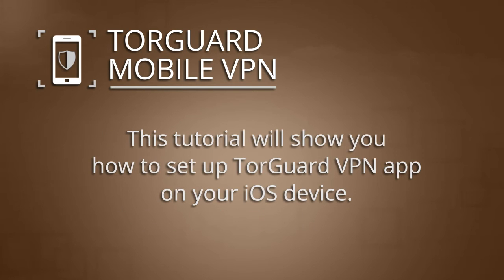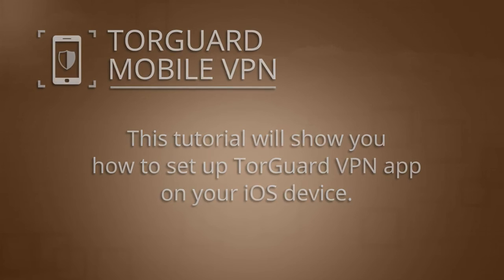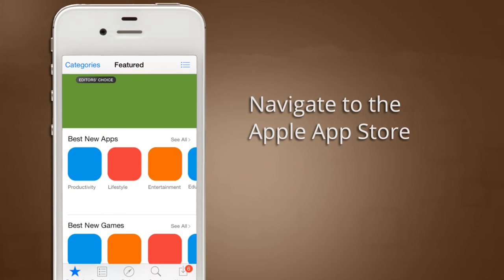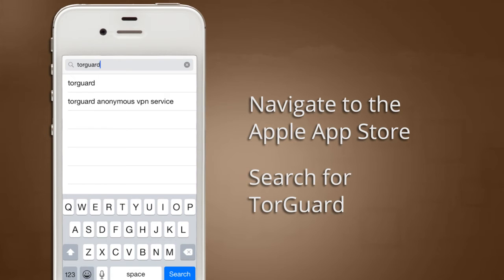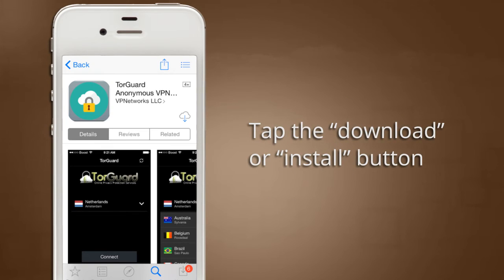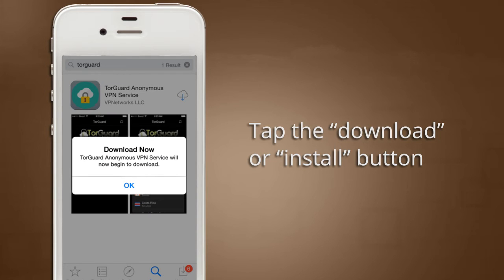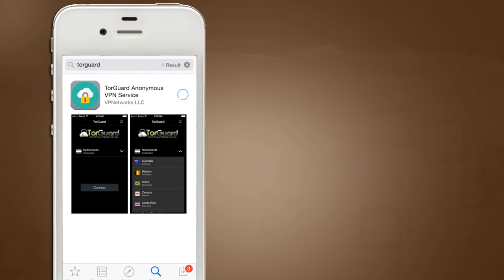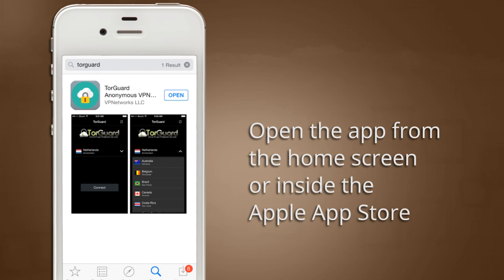In this tutorial, we will show you how easy it is to set up the TorGuard VPN app on your iOS device. First, navigate to the iOS App Store and search for TorGuard. Click the link and select the Download or Install button. Once installed, navigate to your home screen on your mobile device and select the newly added TorGuard icon, or tap Open from inside the iOS App Store.